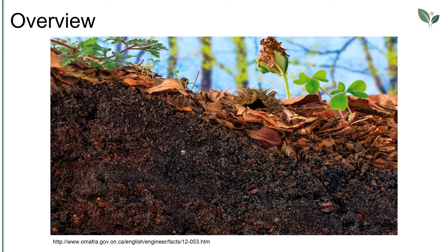Half of the topsoil on the planet has been lost in the last 150 years. In addition to erosion, soil quality is affected by other aspects of agriculture. These impacts include compaction, loss of soil structure, nutrient degradation, and soil salinity.